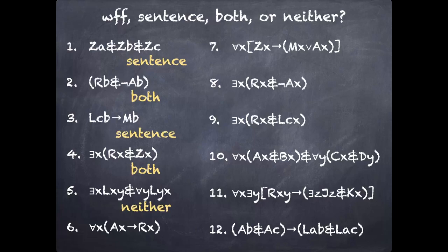Six is tidy. It looks good. It's both. Seven has no free variables, definitely a sentence, but it's using the square brackets convention. So it is a sentence. Eight is both. Nine is both.